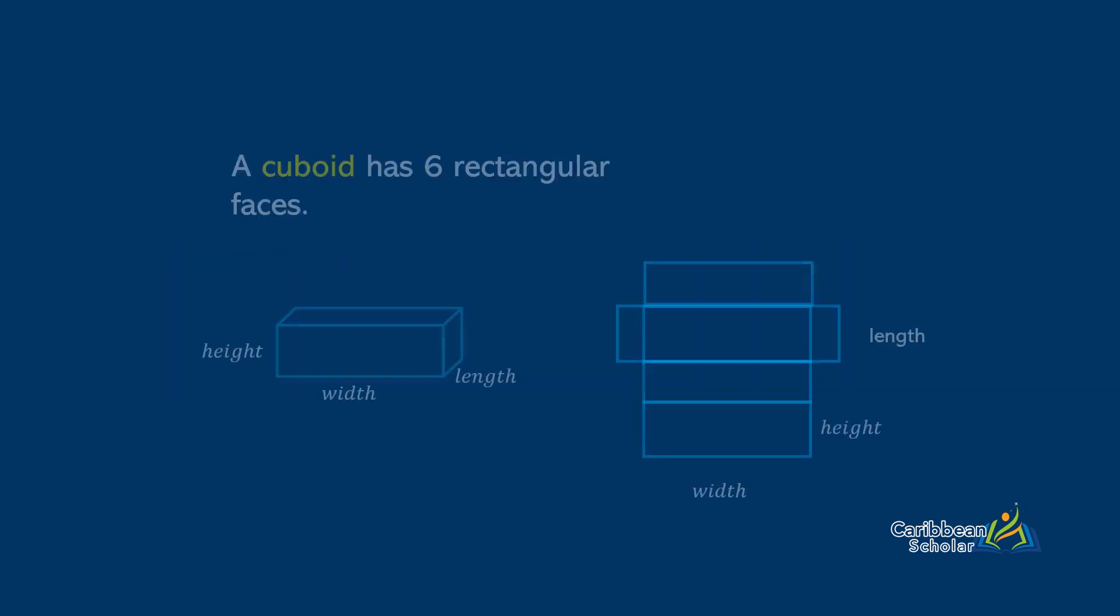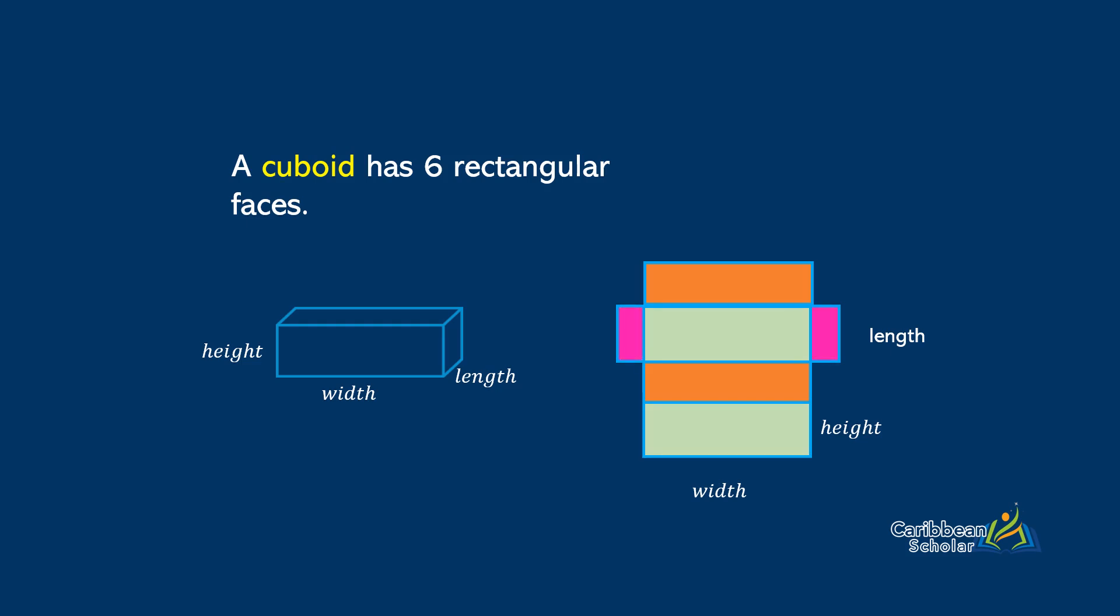Next we move on to the cuboid, and a cuboid has six rectangular faces. They also have three different lengths: these are the height, the width, and the length. Because of these three lengths, we can have three different types of faces, and these are length by width, width by height, and length by height. Here notice that there are two of each type of face. So to find the area of a cuboid, we can find the sum of two times each face.